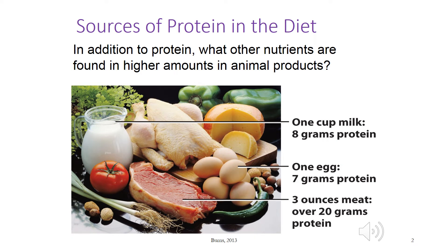Egg protein is the reference protein. In addition to protein, what other nutrients are found in higher amounts in animal products?